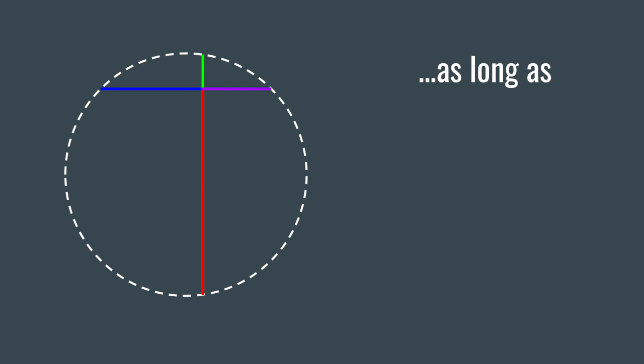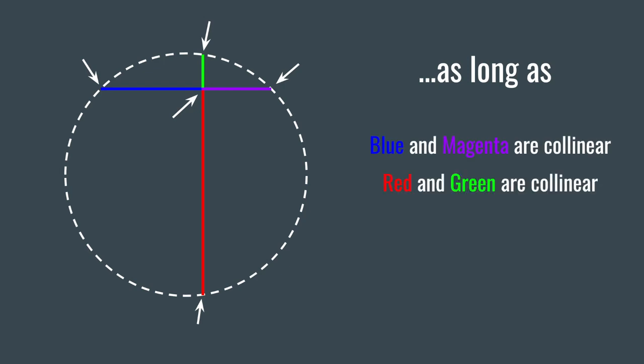This also all holds true as long as each line segment has an end point on their circumference and the remaining points intersect in one point on the interior of the circle. Additionally, the blue and magenta line segments must be collinear, and the red and green line segments must be collinear.